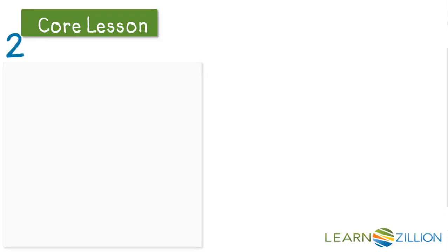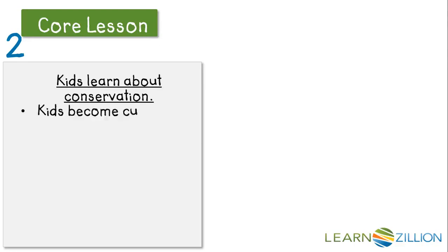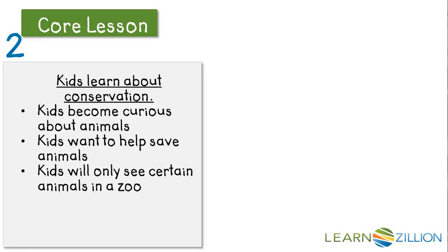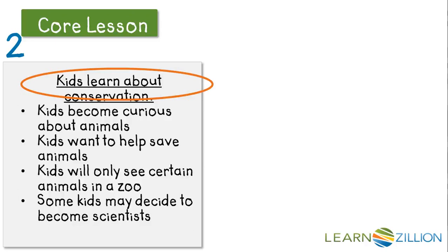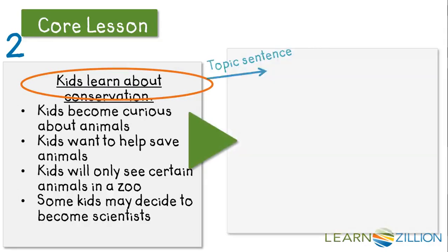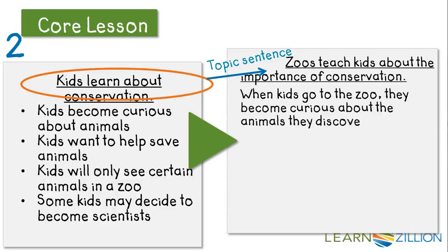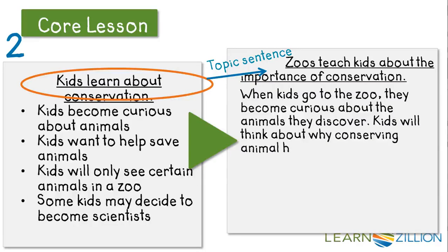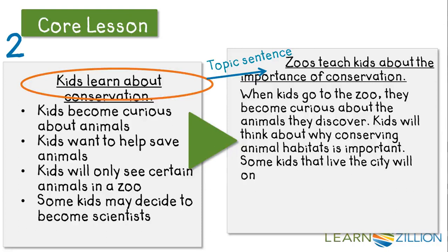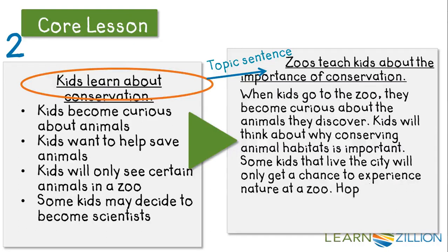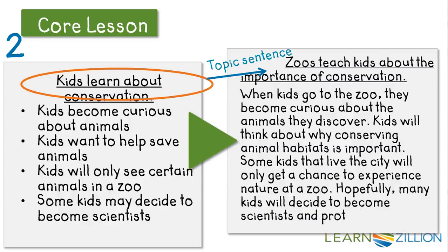Now I'm ready to move on to my third point, which is kids learn about conservation. Kids become curious about animals when they go to zoos, and kids want to help save animals. Kids also only get the chance to see certain animals by visiting a zoo, and some kids may even decide to become scientists. Topic sentence: "Zoos teach kids about the importance of conservation." Supporting details: "When kids go to the zoo, they become curious about the animals they discover. Kids will think about why conserving animal habitats is important. Some kids that live in the city will only get a chance to experience nature at a zoo. Hopefully, many kids will decide to become scientists and protect animals."